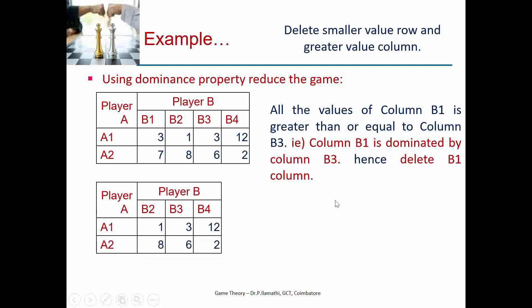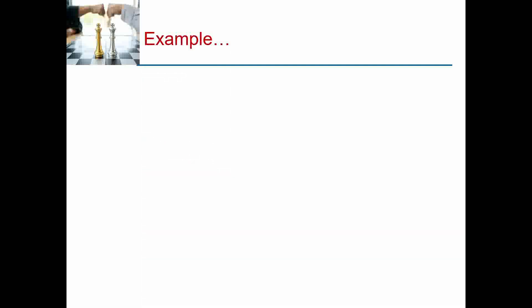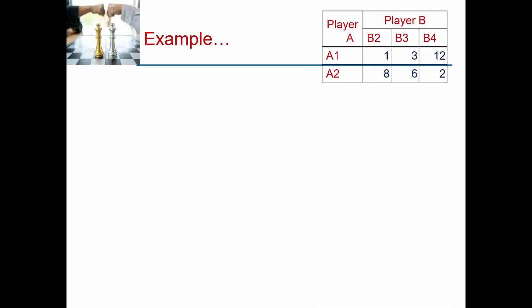After deleting B1 using the dominance property, we get a reduced payoff matrix with 2 strategies for player A and 3 strategies for player B (B2, B3, B4). We now move on to the graphical method of solution. The given problem after reduction is the matrix we will use to construct the graph.